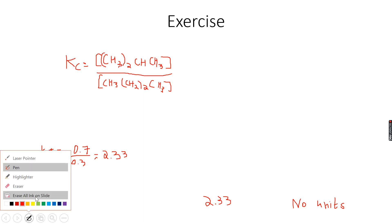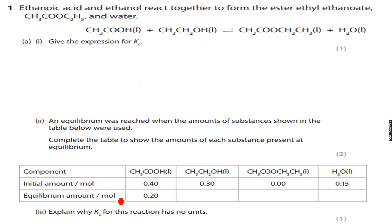So we are done with this question. Now next question: give the expression. Ethanoic acid and ethanol react together to form the ester ethyl ethanoate (CH₃COOC₂H₅) and water. Water is a product in this reaction and all of them are in liquid state, not aqueous. So water is not a solvent — it is a product. Therefore when we write the expression for Kc, we will have to include the concentration of water.